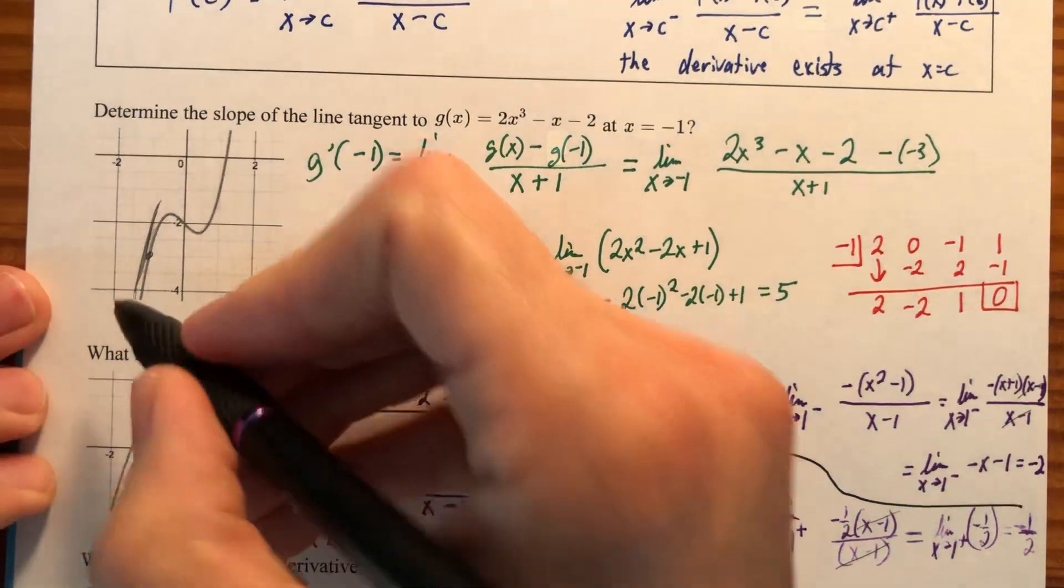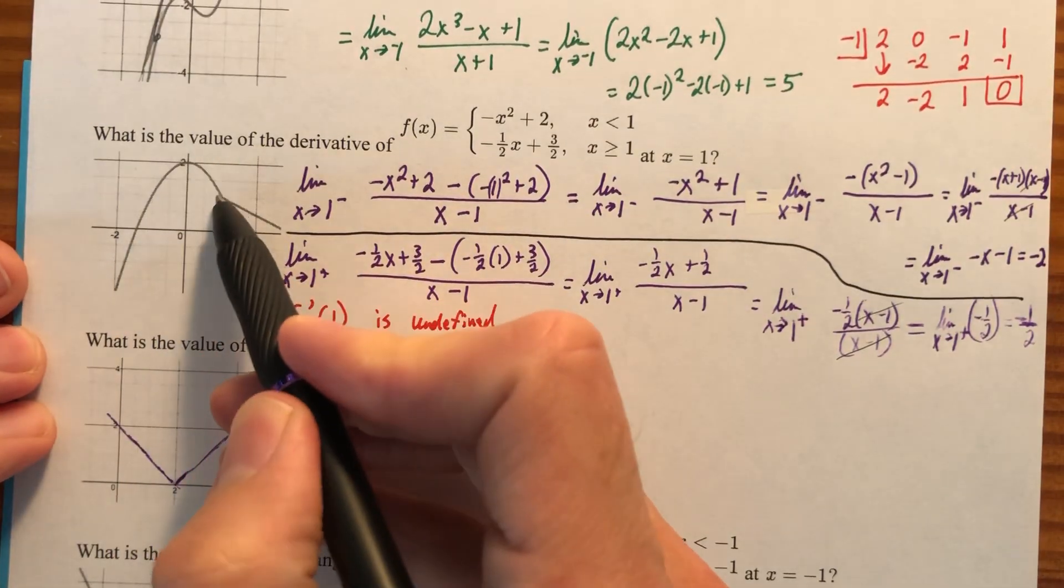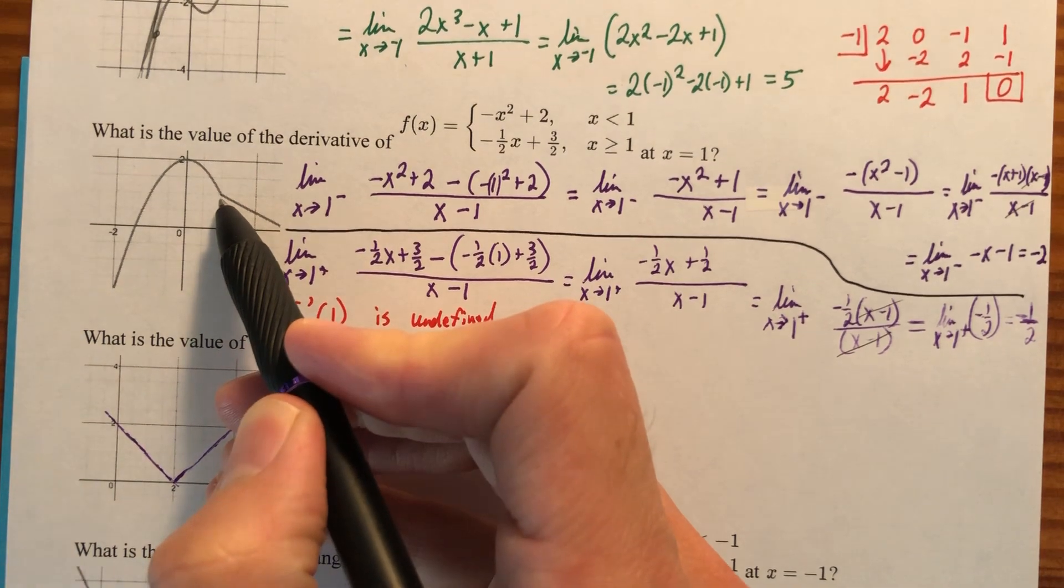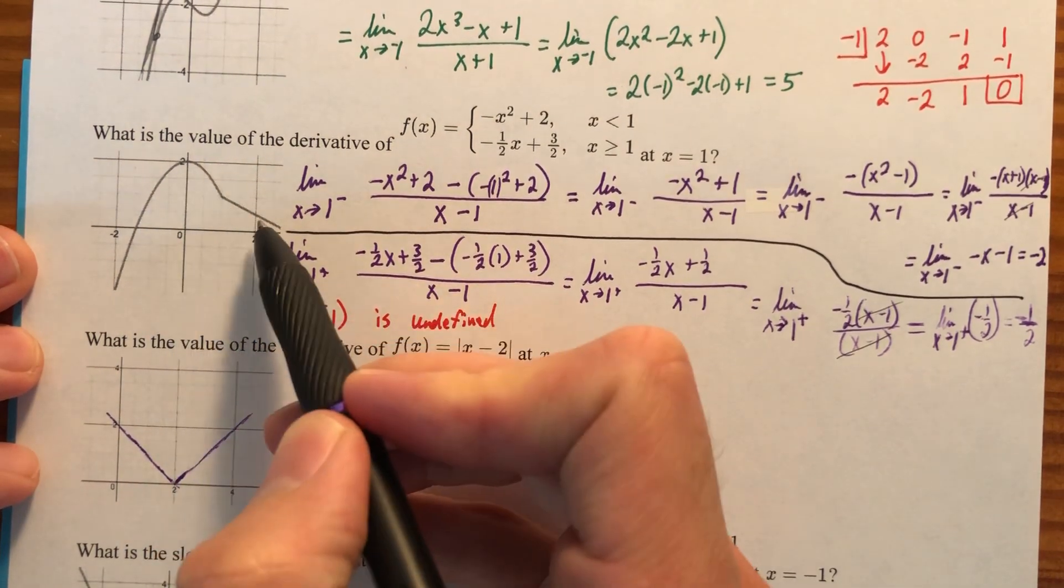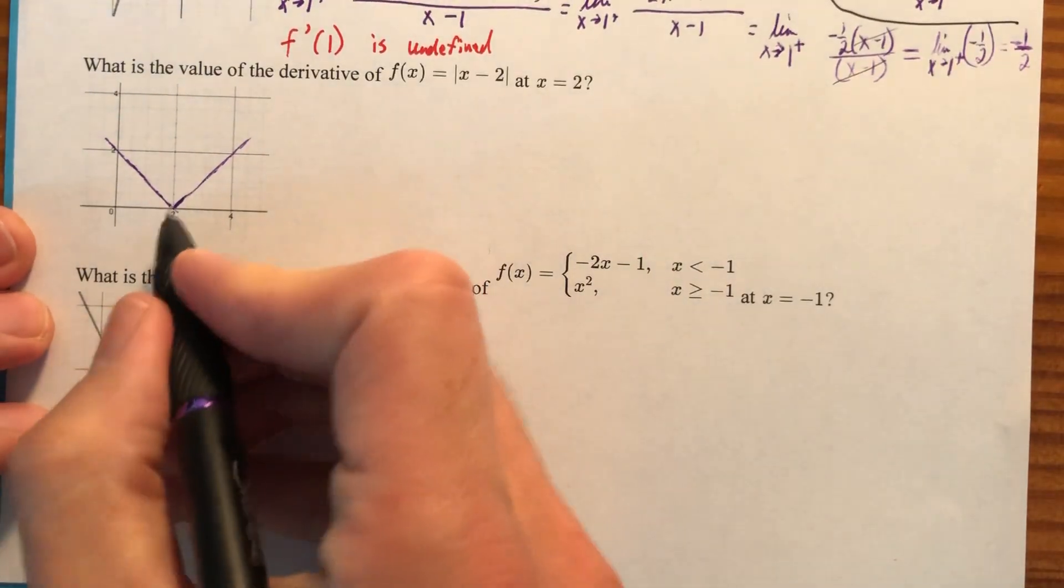As we followed along here, we found the slope here was 5. As we followed along here, we found out the slope doesn't exist, and it doesn't exist because the slope coming in from this side and the slope coming in from this side, they didn't match. So I want to know the slope at 2.